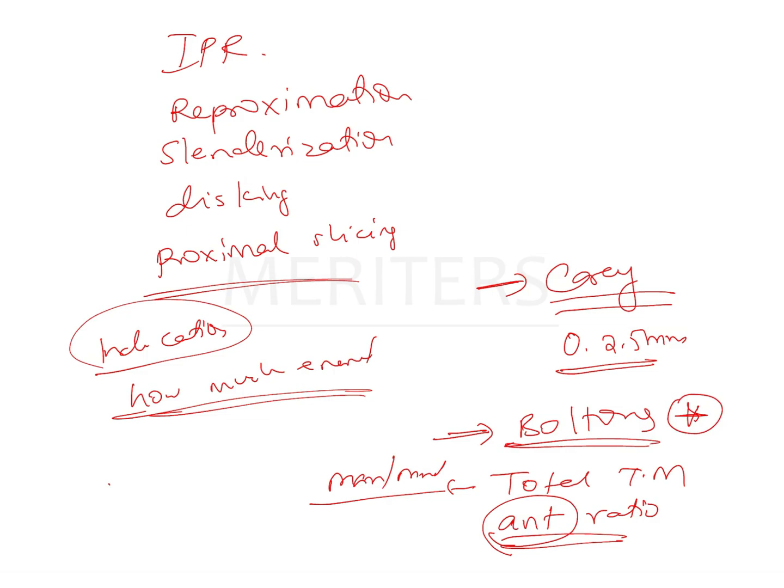Another analysis that is helpful in IPR is the Peck and Peck analysis. The Peck and Peck analysis tells us whether there is a need or an indication for interproximal stripping in the lower incisors. This analysis is restricted only to the lower incisors and it measures the value of the labiolingual as well as the mesiodistal diameters of the lower incisors.